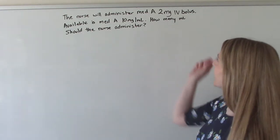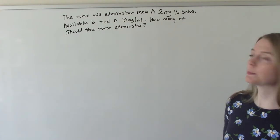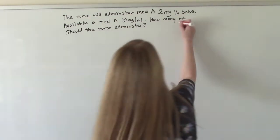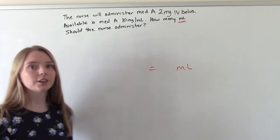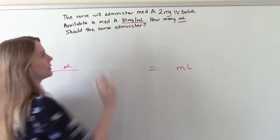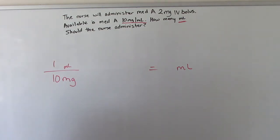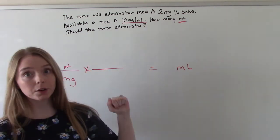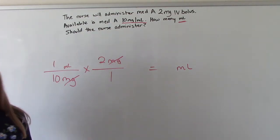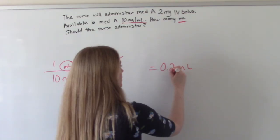The nurse will administer medication A, two milligrams IV bolus. Available is medication A, 10 milligrams per mL. How many mLs should the nurse administer? We're looking for mLs, so we want mLs in our answer and therefore also in our numerator. 10 milligrams is equivalent to 1 mL, so we set it up that way. How much do we want to give? 2 milligrams over 1. The milligrams will cancel, leaving us only with mLs. When you do the math, you get 0.2 mLs.